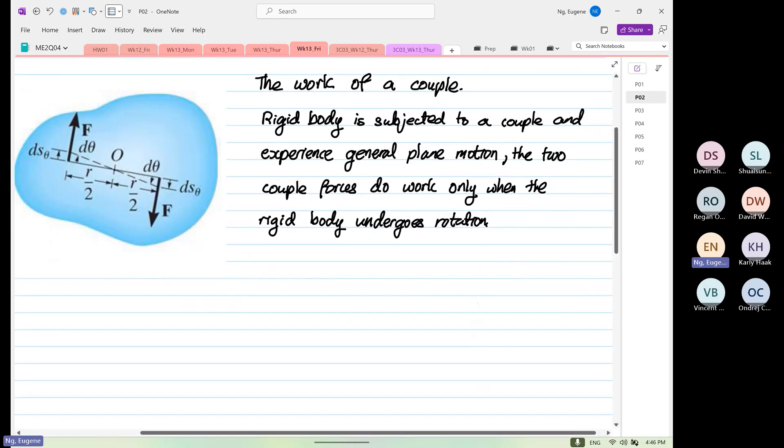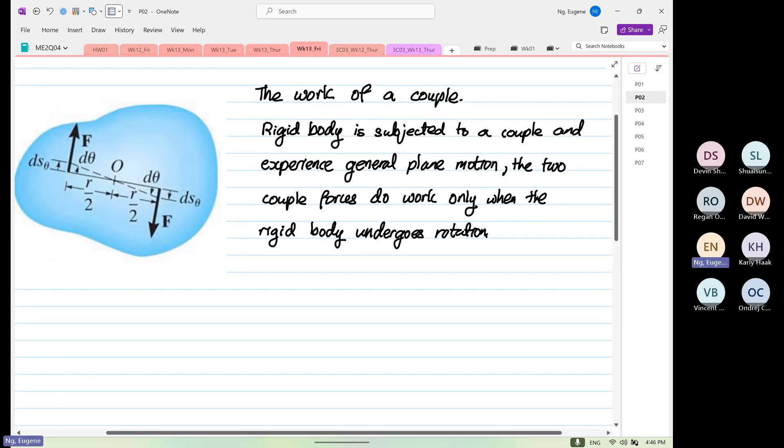So the formula that we're going to use is, and this is you integrate theta 2, theta 1, M d theta. In terms of math, this is the most complicated equation that you'll see for this chapter.